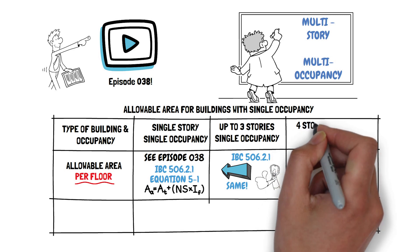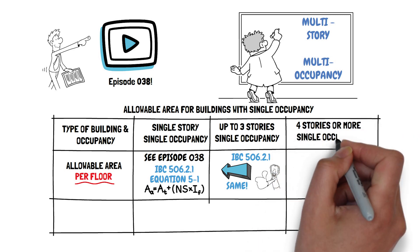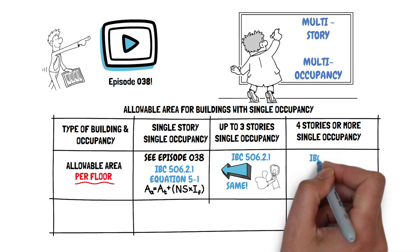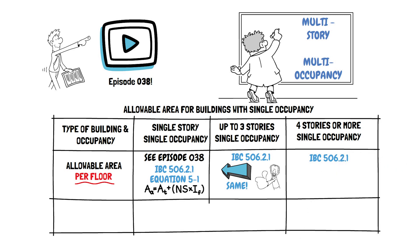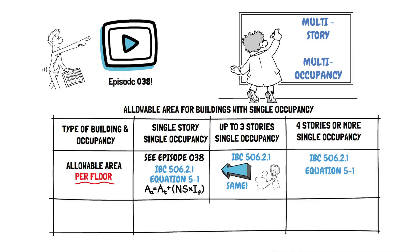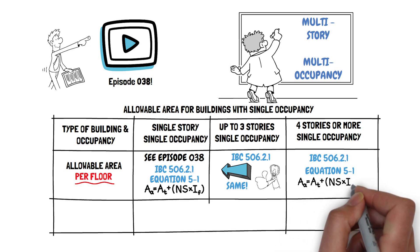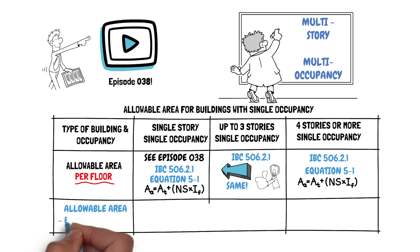What if we had a single occupancy building with more than three stories above grade? This, too, is simple. The answer is also in IBC 506.2.1. The allowable area for each floor does not change — Equation 5.1 remains the same for the area per floor — but now we add a limitation: not just the allowable area per floor, but also the allowable area for the entire building.